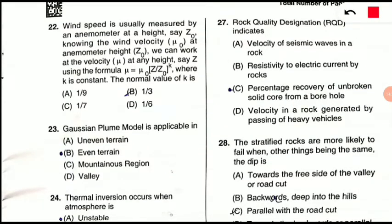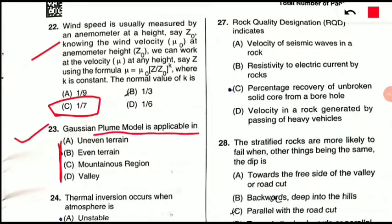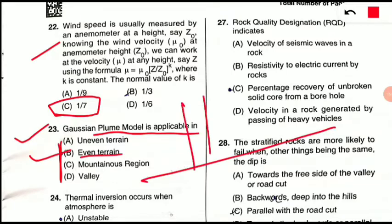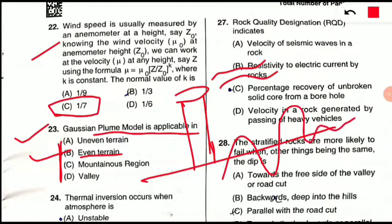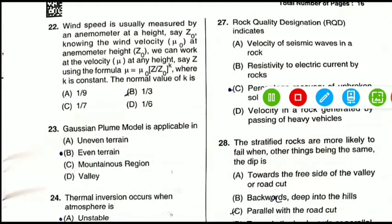Question 22 is a numerical related to the anemometer and velocity constant formula — it is left for a separate video, but the answer is 1/7. Question 23: The Gaussian plume model is applicable in which kind of terrain? The correct option is B — even terrain. When terrain is even, the rise of the plume and release of gases can be predicted using the Gaussian plume model; when terrain is uneven, this model cannot be applied.